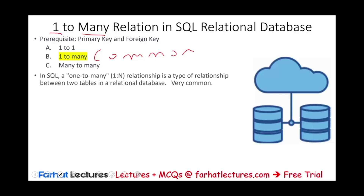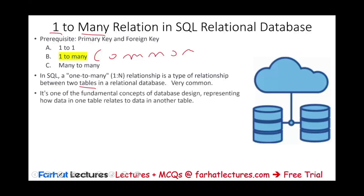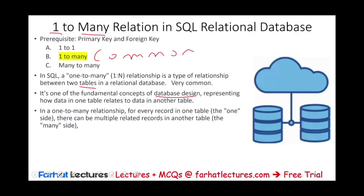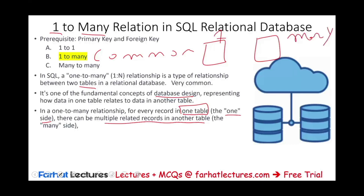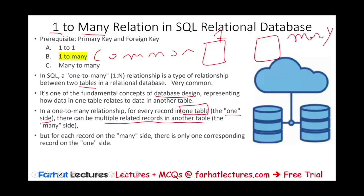In SQL, a one-to-many relationship is a type of relationship between two tables. We are dealing with two tables and connecting them, and this relationship is very common — it is one of the fundamental concepts of database design, representing how data in one table relates to data in another table. For every record in the one-side table, there are multiple related records in the many-side table, but each record on the many side corresponds to only one record on the one side.